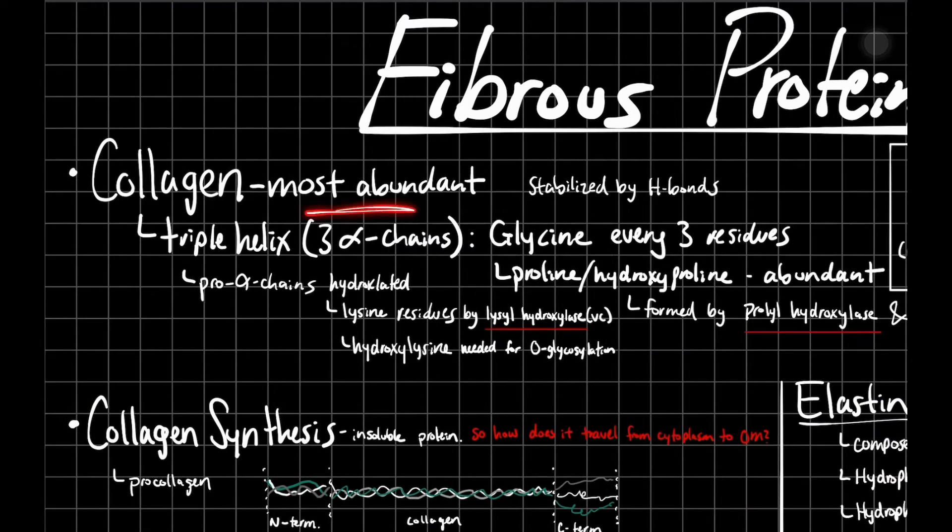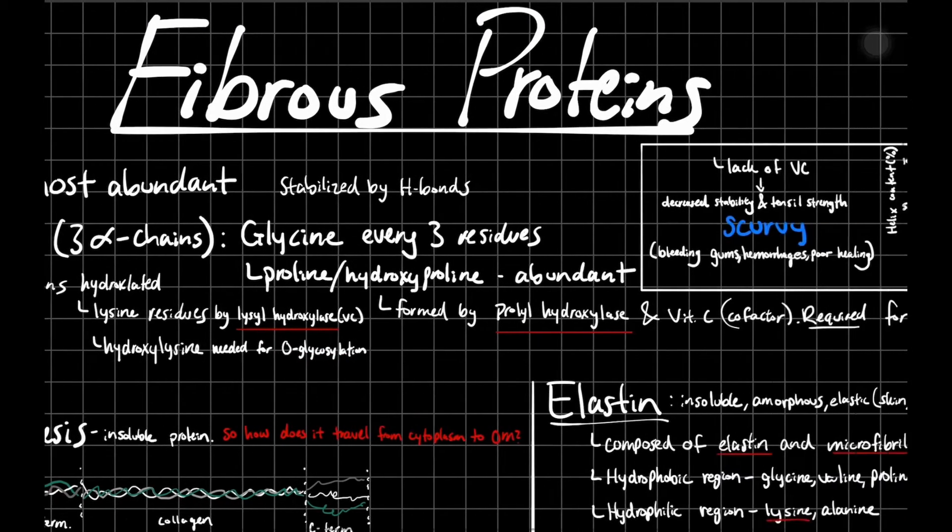Collagen is going to be your most abundant protein in your body. It's stabilized by hydrogen bonds, and those hydrogen bonds are formed within these triple helix structures. You're going to have these alpha chains - you need three of them to form a triple helix, obviously. And they're going to be formed from pro-alpha chains. Those pro-alpha chains are going to be hydroxylated residues, so you can have lysine residues that are hydroxylated by lyso-hydroxylase. Then you need these hydroxylysine residues to glycosylate them.